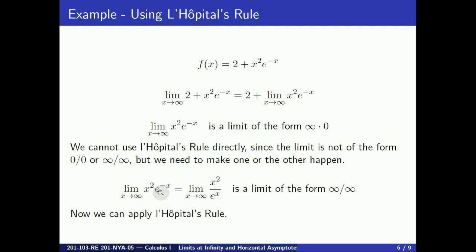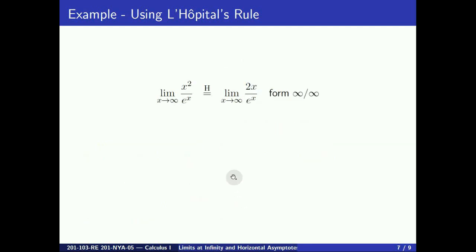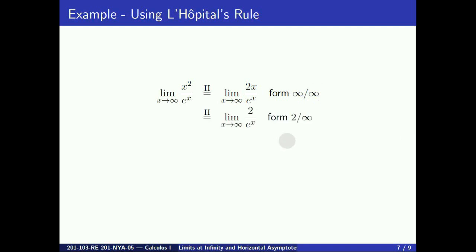In a previous video, we have seen a limit of this type, and the strategy was to send the exponential function to the denominator in order to get a limit of the form infinity over infinity. So here we send e to the minus x to the denominator, and we get x squared over e to the x. Now we can apply L'Hôpital's rule. By taking the ratio of the derivative of the numerator over the derivative of the denominator, we get the limit of 2x over e to the x. This is still of the form infinity over infinity, so we apply L'Hôpital's rule again, giving the limit of 2 over e to the x.